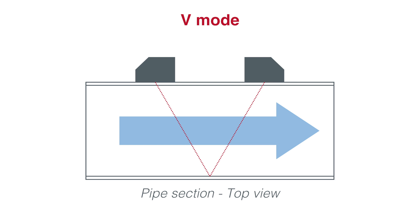We will use the V mode where the two probes are placed on a diameter plane, both of them on the same side of the pipe. Other mounting modes exist, but we will not detail them here.